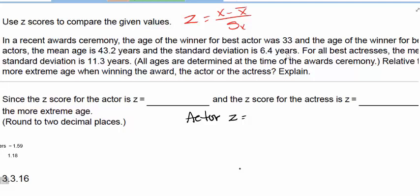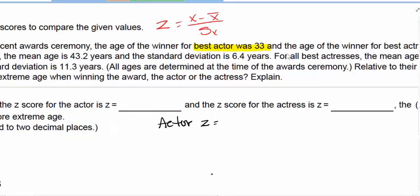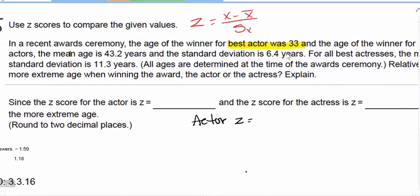Let's look at the actors. We are going to take the value. In this recent show, the actor was 33 years old. For actors, the mean age is 43.2 and the standard deviation is 6.4. Go ahead and calculate the z-score for the actors.